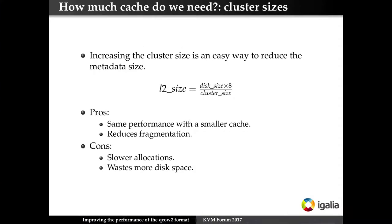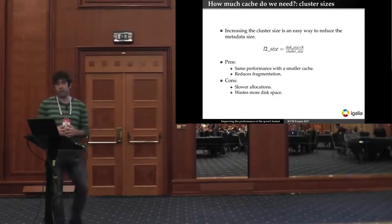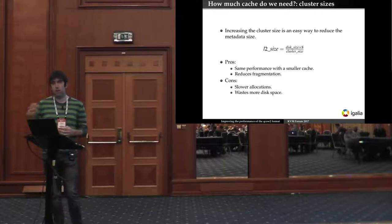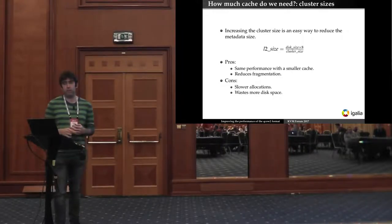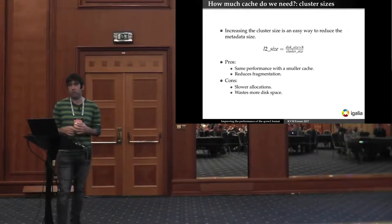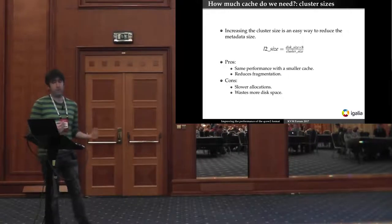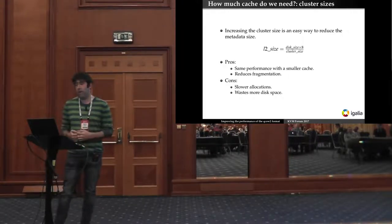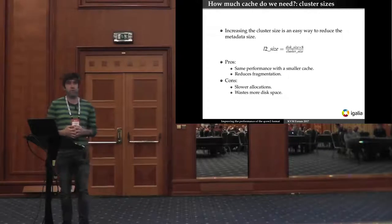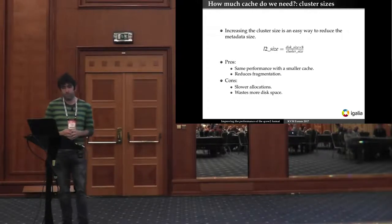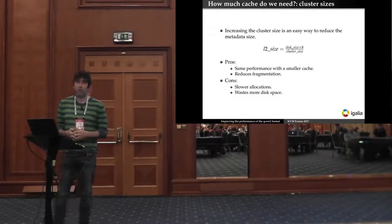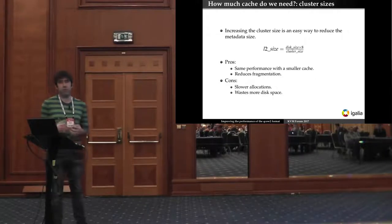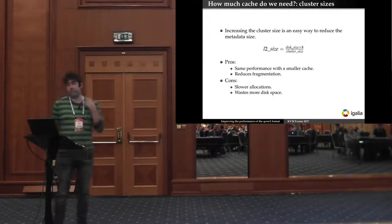There's however a general pattern that if we increase the cluster size we decrease the metadata size. So one easy way of reducing the amount of cache that we need is by increasing the cluster size. That has the benefit that we have the same performance with a smaller cache. It has also the benefit that it reduces fragmentation in the QCOW2 image but it has two problems. Allocations are slower because every time you allocate a cluster you have to allocate a larger cluster and it wastes more disk space of course.